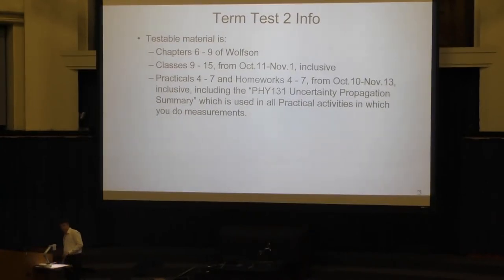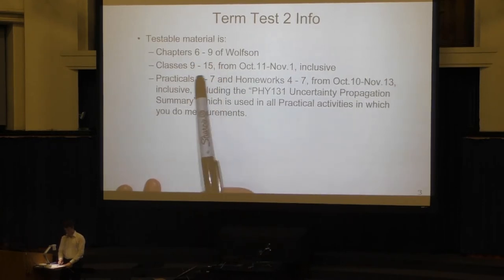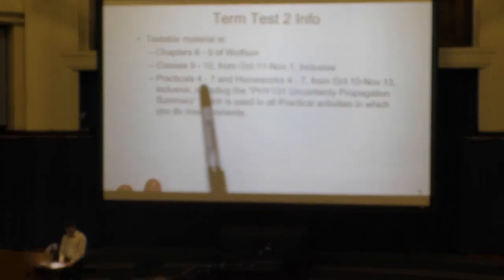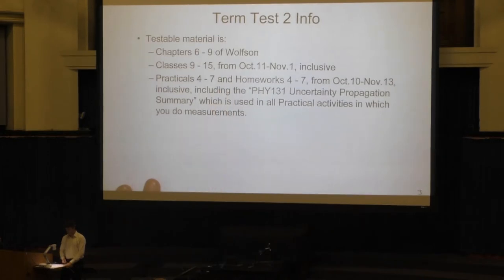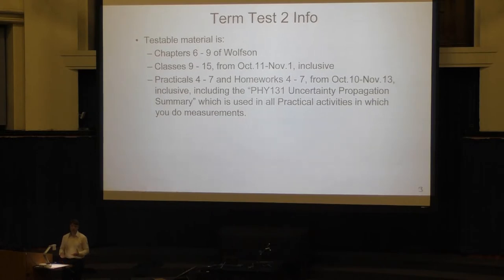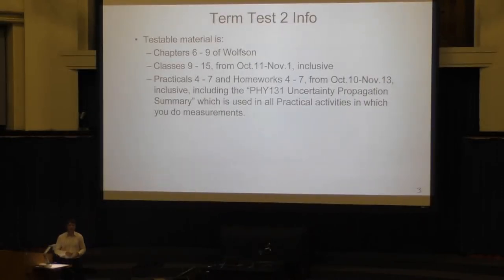The testable material will be chapters 6 through 9, which is classes 9 through 15, up to November 1st. Practicals 4 through 7 and the homeworks associated with each practical — homework 4 was from practical 4, and homework 7 was included. Also, the PHY 131 uncertainty propagation summary — that one-page PDF provided in practicals — is testable for tomorrow night's test.